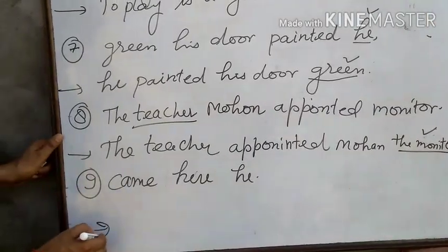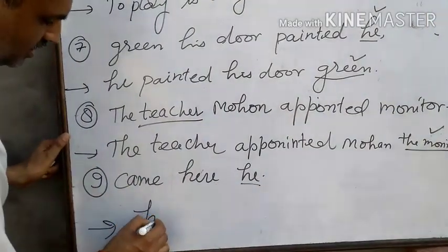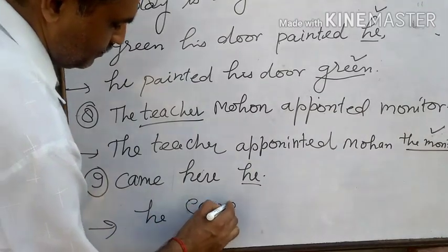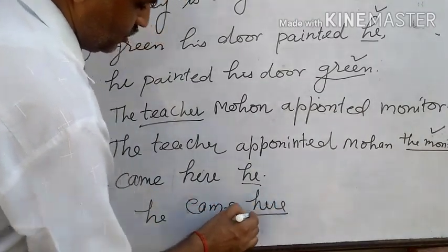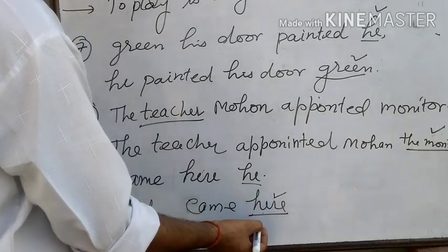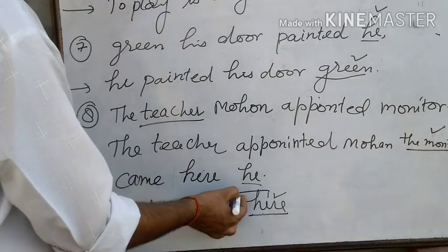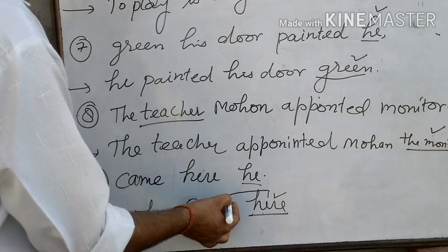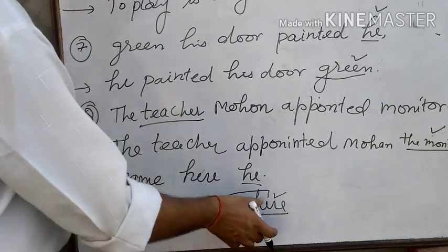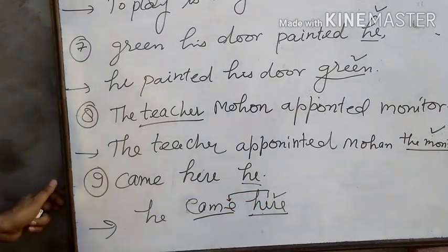He came here. Students, pick out subject: he came here. 'Here', 'today', 'yesterday', 'tomorrow' - these are adverbs because these modify the verb. He came here. 'Here' is adverb.